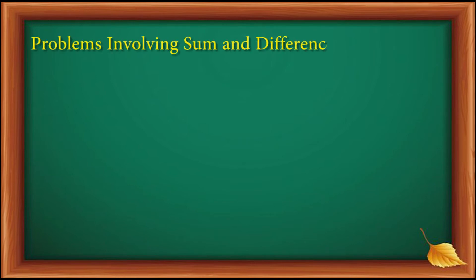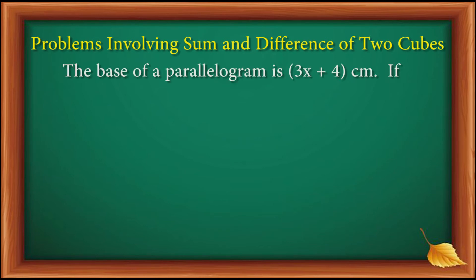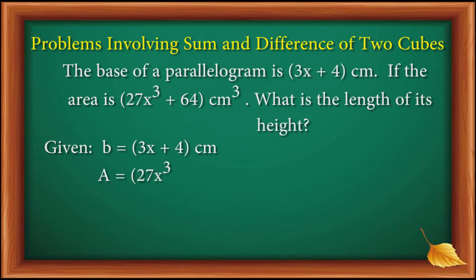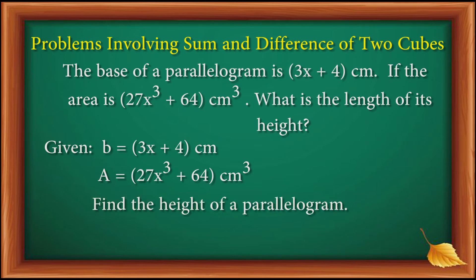Let's have another example — problems involving sum and difference of two cubes. The base of a parallelogram is 3x plus 4 cm. If the area is 27x cubed plus 64 cm³, what is the length of its height? The given: base equals 3x plus 4 cm, and area equals 27x cubed plus 64 cm³. Find the height of the parallelogram.